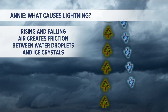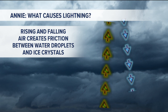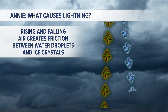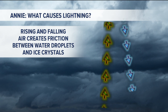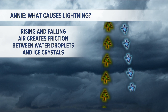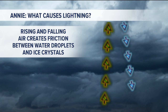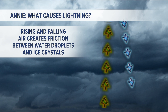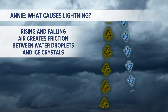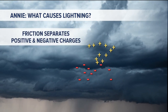Well, in order to get thunderstorms, we have to have rising air, and then when the rain's falling, that's sinking air. So there's a lot of air moving around inside clouds, Annie, and clouds are made up of tiny water droplets. So all those little water droplets are bumping into each other.